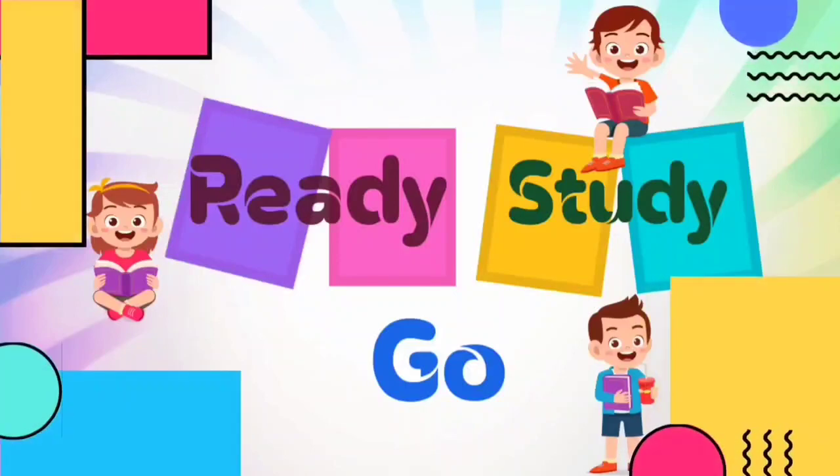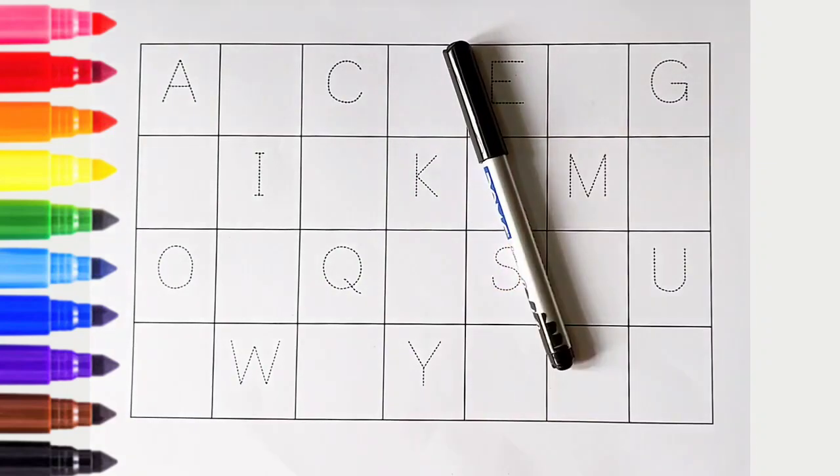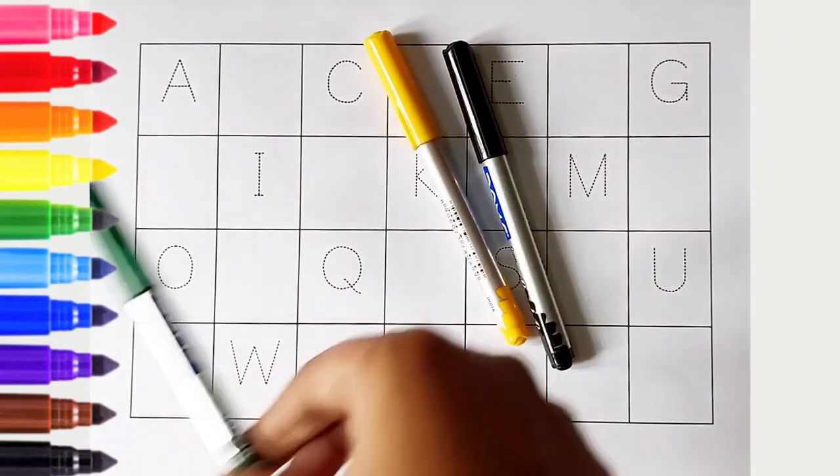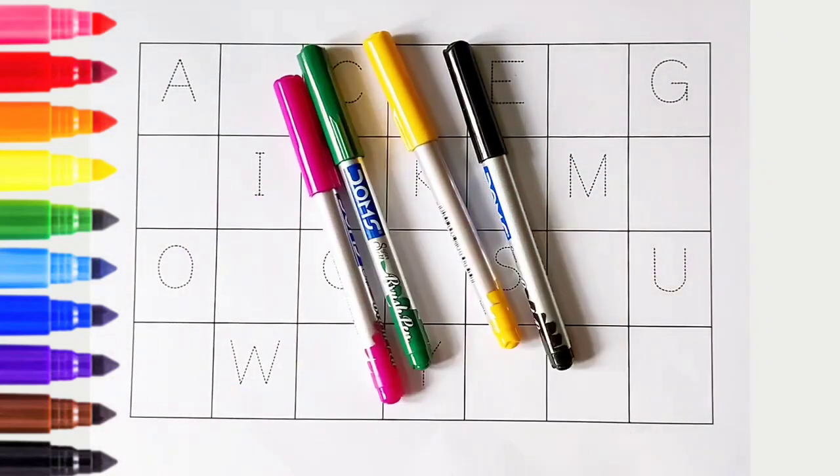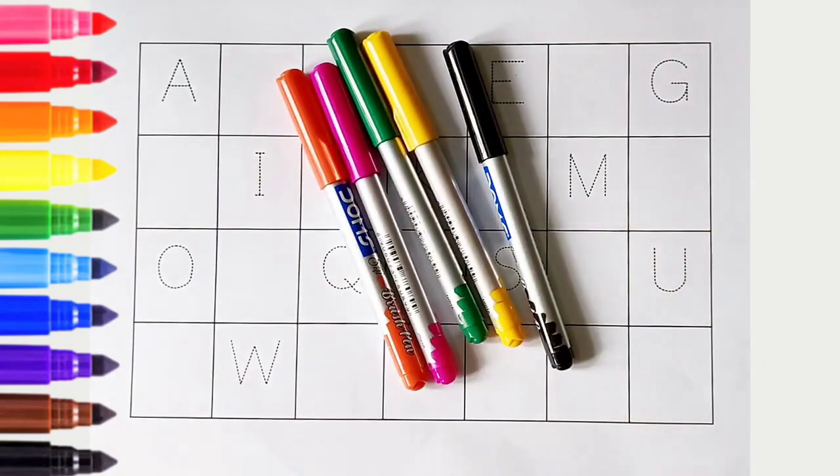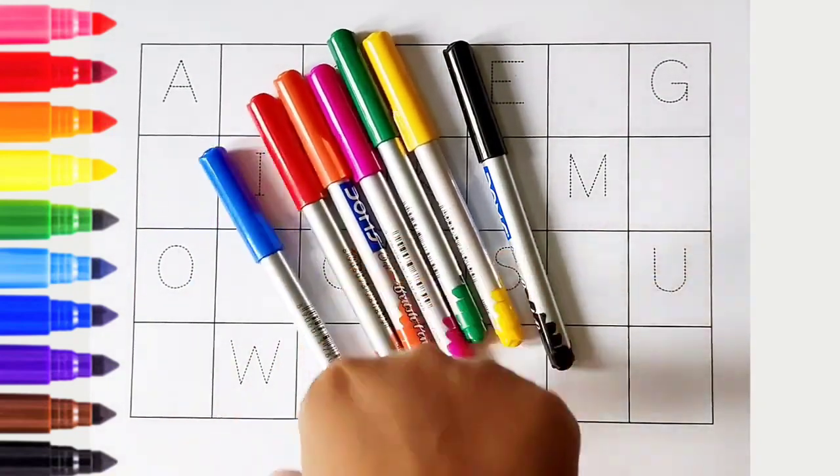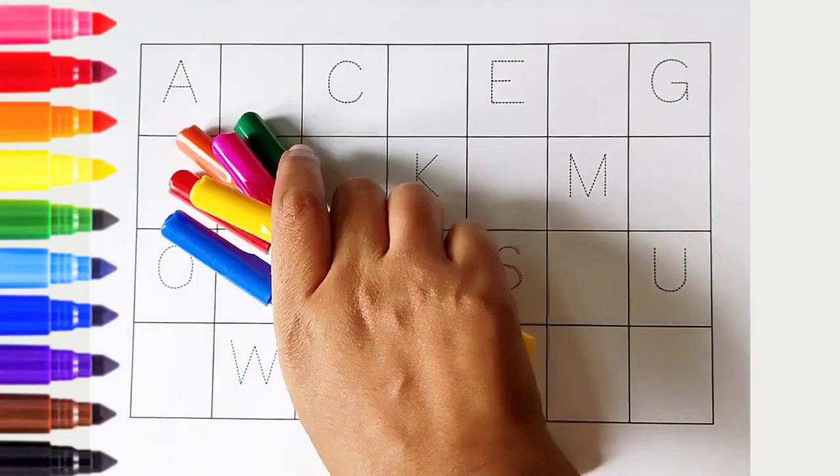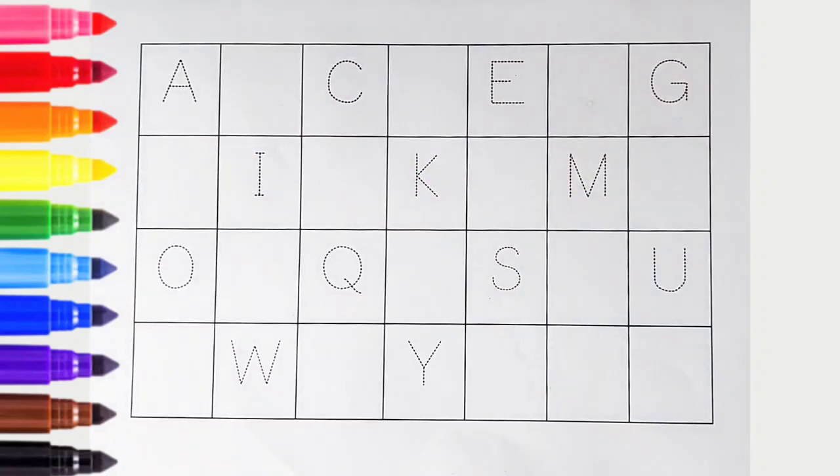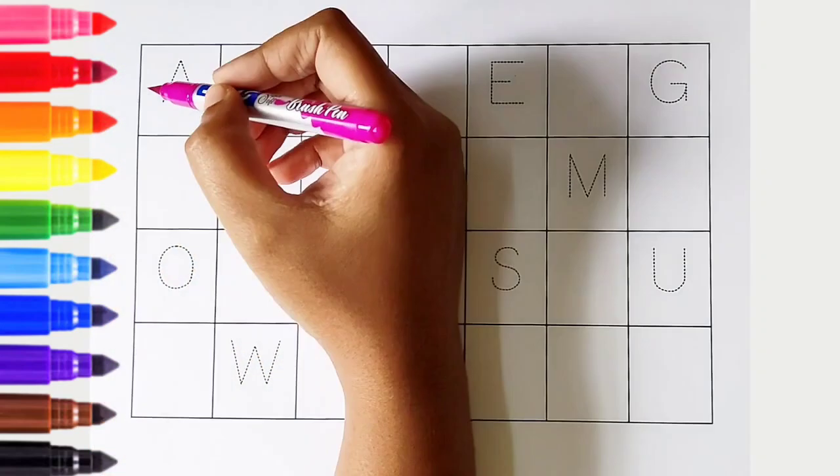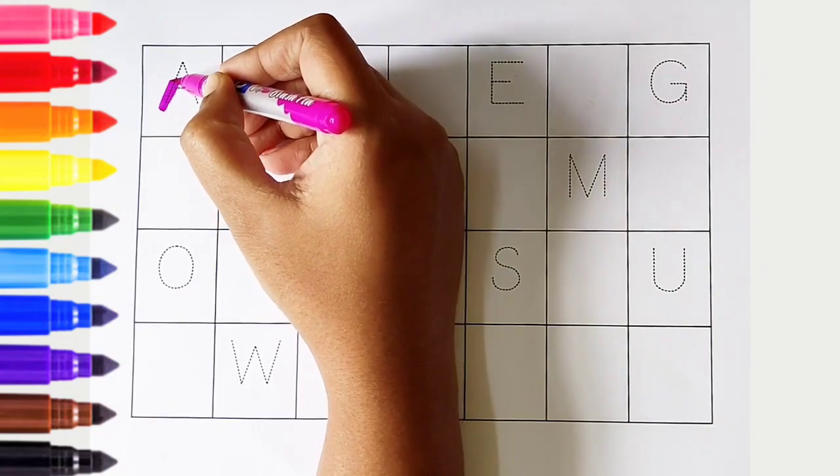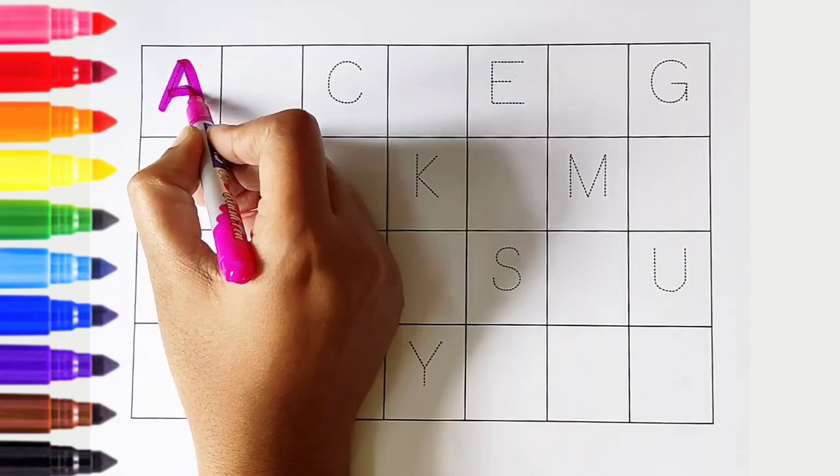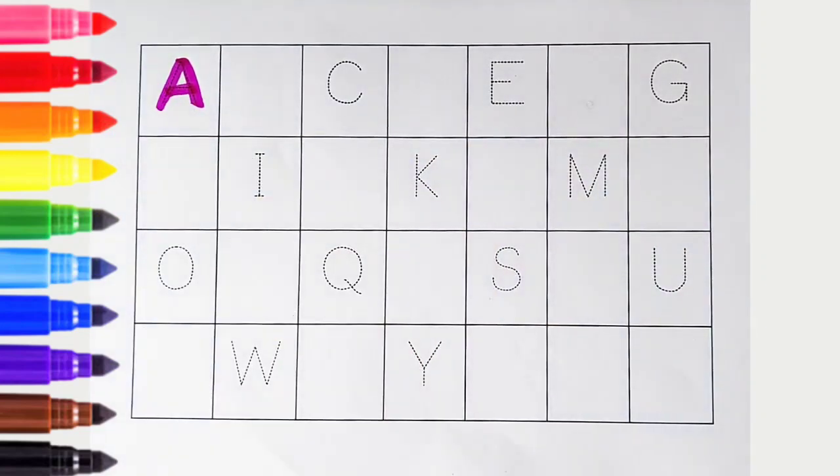Ready, study, go! Black color, yellow color, green color, pink color, orange color, red color, blue color. Hi kids, today we can learn the alphabets from A to Z. Let's begin! A, dark pink color, A is for apple.